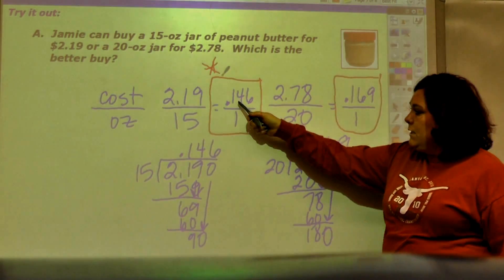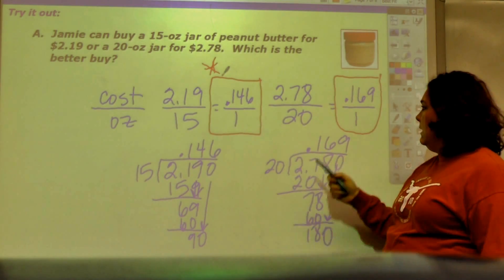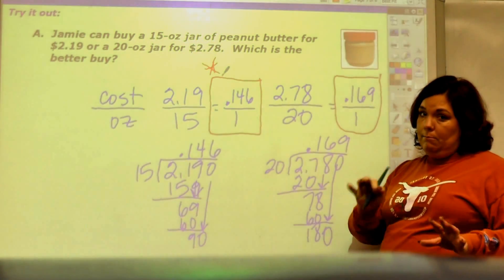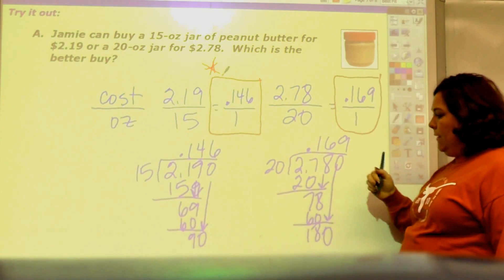15 cents or 14.6 thousandths or 14.6 cents, and this is 16.9 cents. So you have to look at this as money and know how to make the comparison.